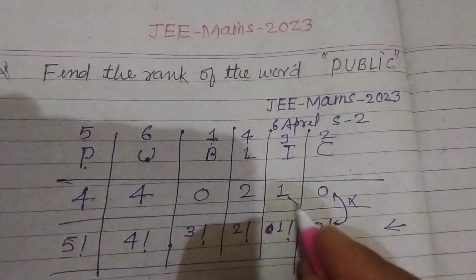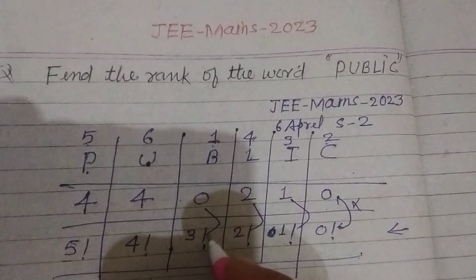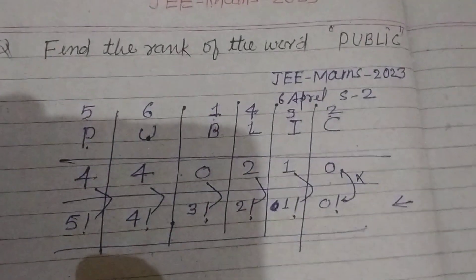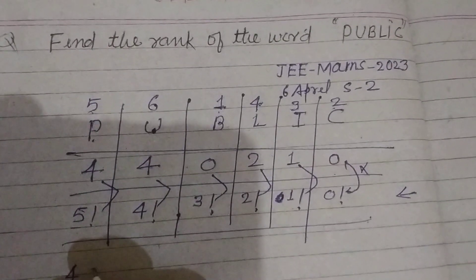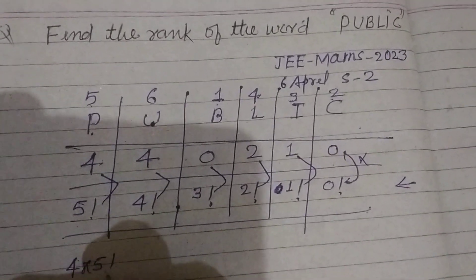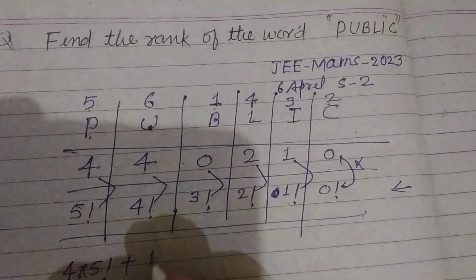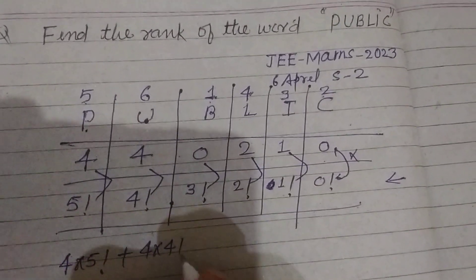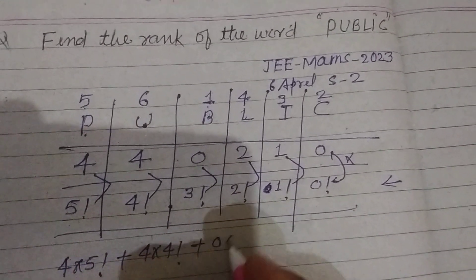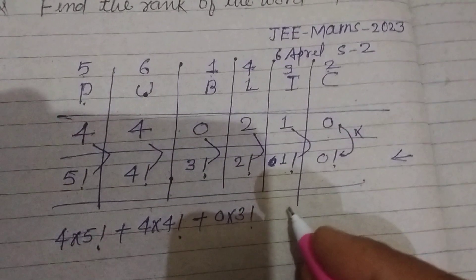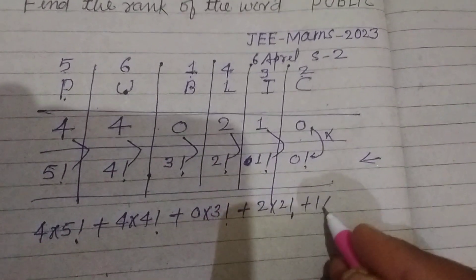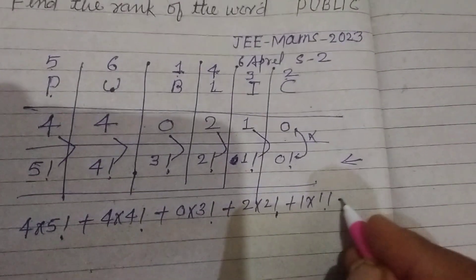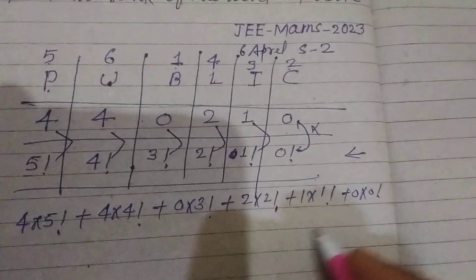So we got here 4×5! + 4×4! + 0×3! + 2×2! + 1×1! + 0×0!. These are the number of letters before the public.